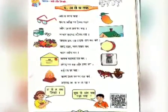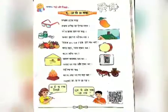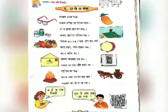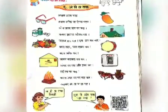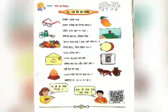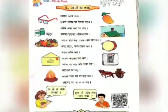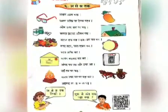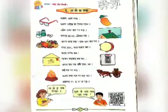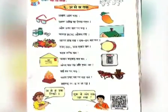Bacchon, aap is paath mein dekh sakte hai ki is paath mein A se lekar Shratak, sare varna jo hum varna mala mein likhte hai, in sare varna ka prayog kiya gaya hai. Jaisi: a, aa, e, ee, u, uu, e, ru, ri, a, i, o, ou, am, aha. Aur g se lekar Shratak, in sare varna ka upyog is paath mein kiya gaya hai.